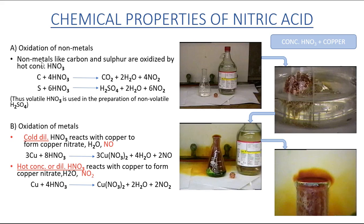Carbon combines with hot concentrated nitric acid to form carbon dioxide, water, and nitrogen dioxide — so carbon is oxidized to carbon dioxide. Sulfur combines with hot concentrated nitric acid to form sulfuric acid, water, and nitrogen dioxide — so sulfur is oxidized to sulfuric acid. This demonstrates that nitric acid is an oxidizing agent. A related exam question: volatile nitric acid is used in the preparation of non-volatile sulfuric acid.